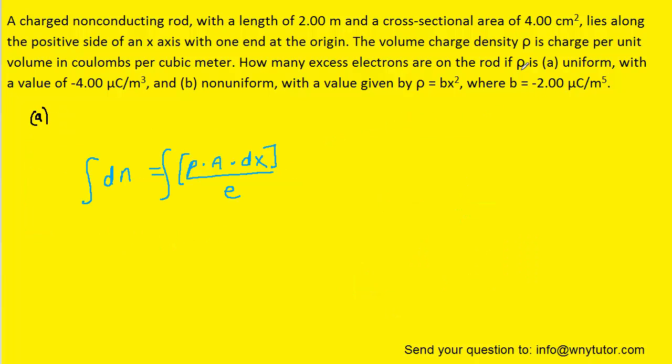Now, in part A, we note that the value of ρ is uniform and constant. And so, since it's a constant, we're going to be able to pull it out of the integral. Also, the area of the rod is a constant, and so is the value of e. So, in fact, we can pull out the ρA/e as a constant to the outside of the integral.